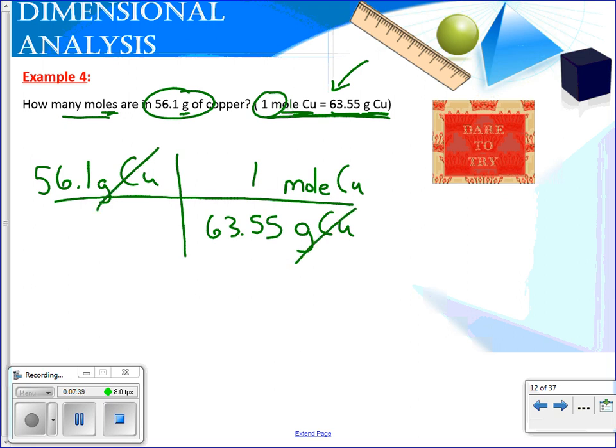What is that relationship? That one mole of copper equals sixty three point five five grams of copper. These units should cross out. We're left with moles of copper, which is what we're wanting. And so when we say fifty six point one times one, we get fifty six point one. Then we divide it by the sixty three point five five. And what you get in your calculator is this.